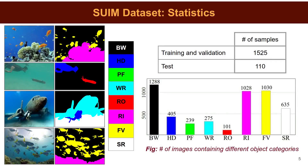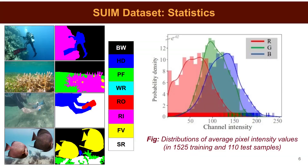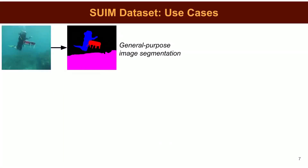Hence, a lot of the images include object categories such as human divers, rovers, wrecks, or ruins as well. This figure further shows the density of pixel values for R, G, and B channels in the entire dataset. We now show a few use cases of the SWIM dataset.